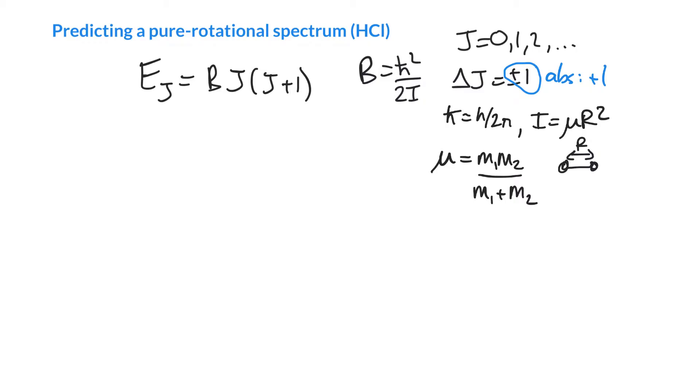We need to specify exactly the molecule we're looking at. I said HCl in the title, but hydrogen and chlorine both have several different isotopes, so we need to specify which isotopes we're looking at.